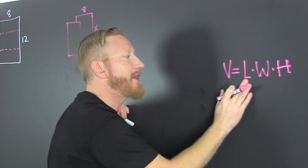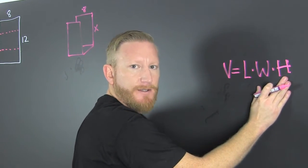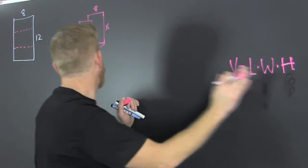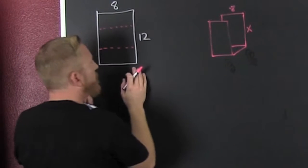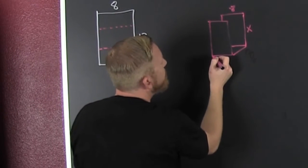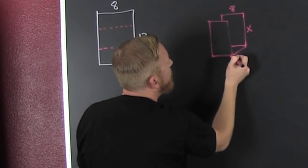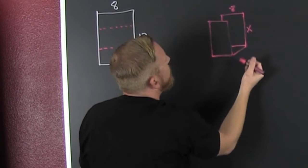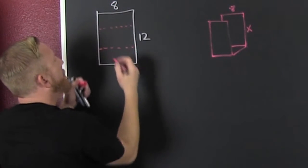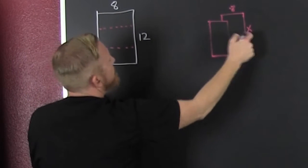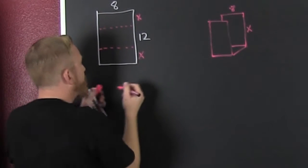The volume is given by length times width times height. We're looking for the volume of this guy. We're going to do the length times the width times the height. That 8 is a constant. That's this side. We're bending them up. So that side is X. This is an X, and that's an X.